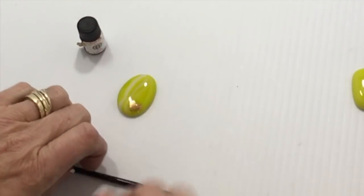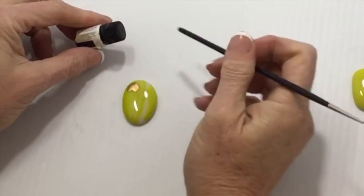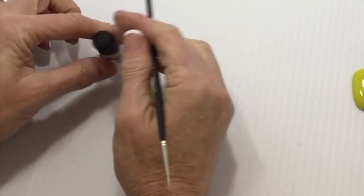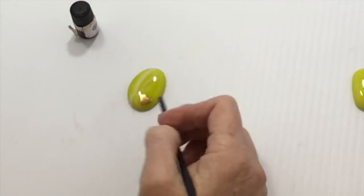For this, I didn't necessarily need to get very detailed. So what I did was use the back of a paintbrush, dip it in there, and just use the back of the paintbrush to get the shape of a heart.